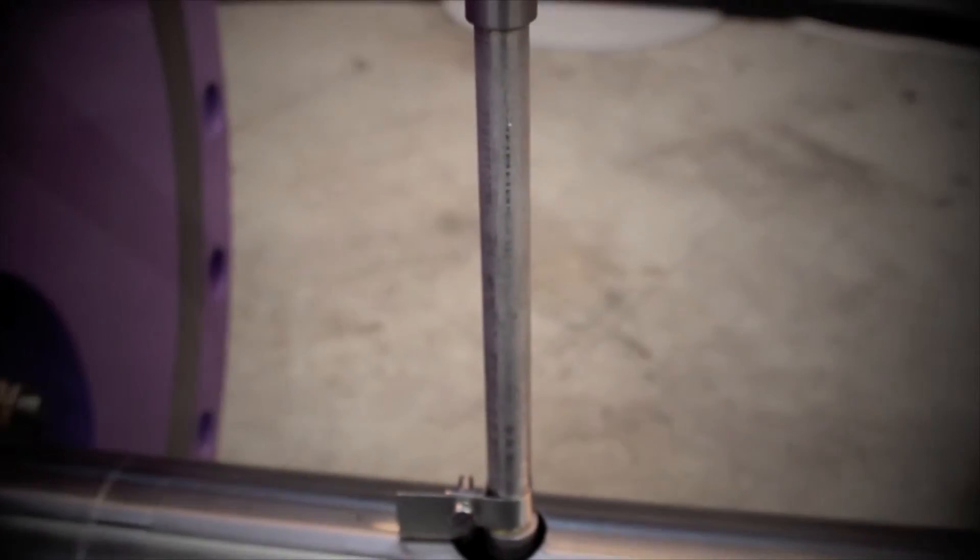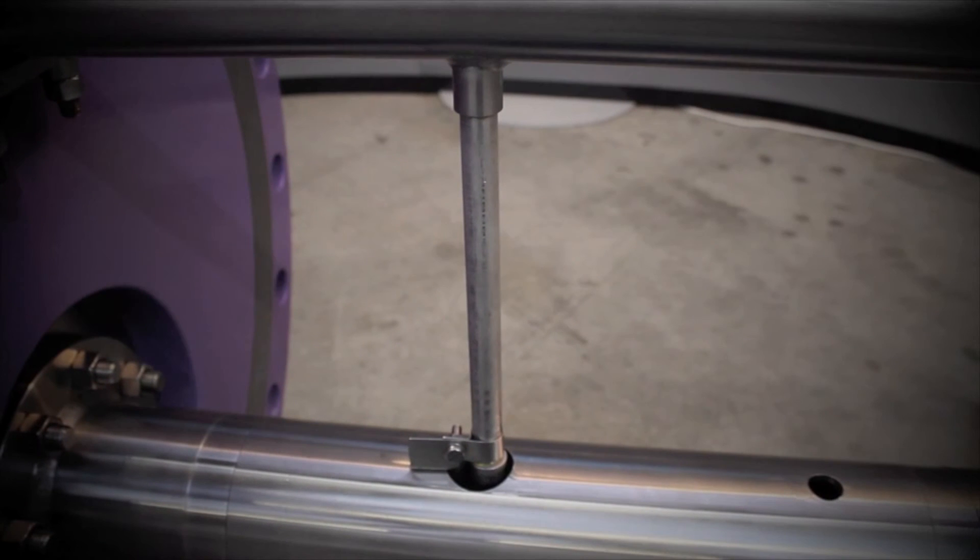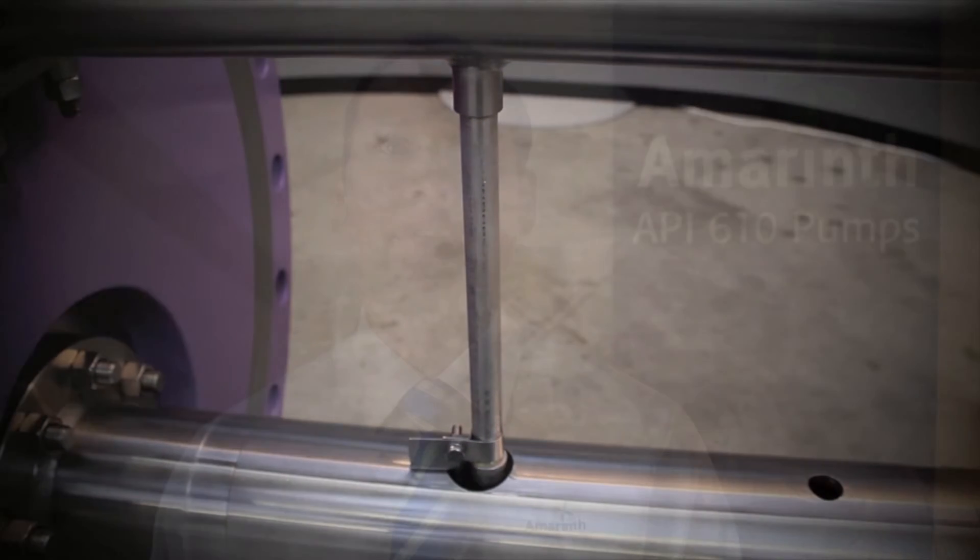You've now successfully removed the bearing lubrication feed pipe, cleaned the individual components, and reinstated the feed pipe assembly. Thanks for watching this video. We hope it's been beneficial. Other useful videos are available. Please visit the Amerinth channel and click subscribe.